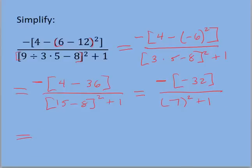And this will be equal to, we've got a negative times a negative up top. A negative, negative 32. A negative times negative makes that a positive 32.